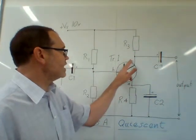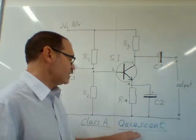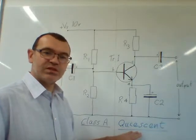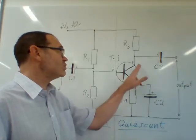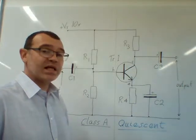We're now going to consider what the collector voltage would be under quiescent conditions. Remember that quiescent conditions mean when no signal is applied under quiet or no signal conditions. What sort of voltage would we expect to see at the collector?